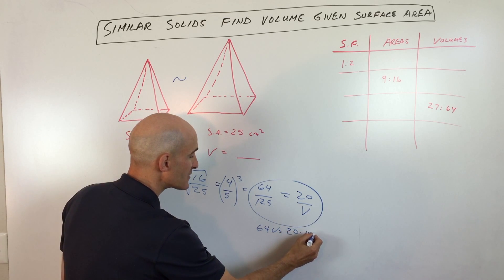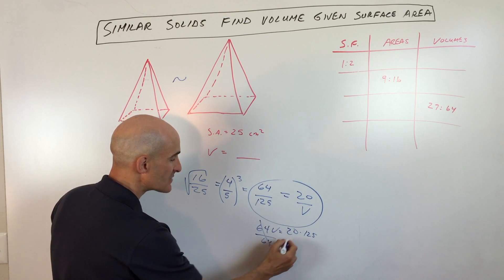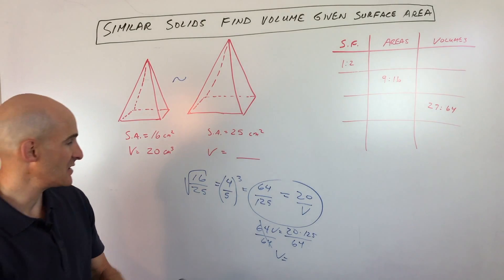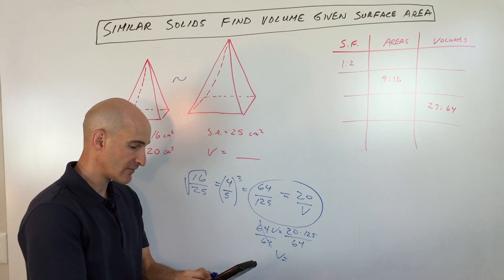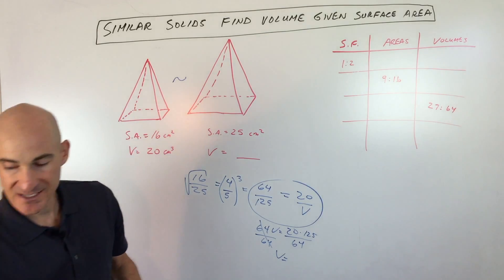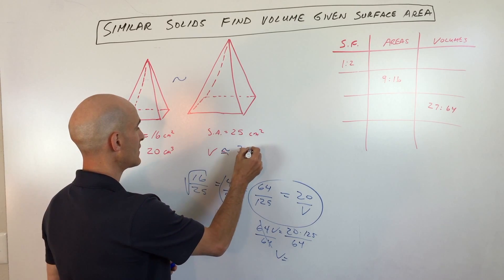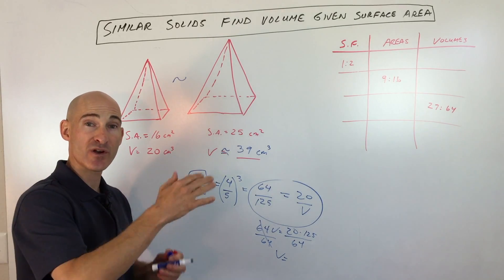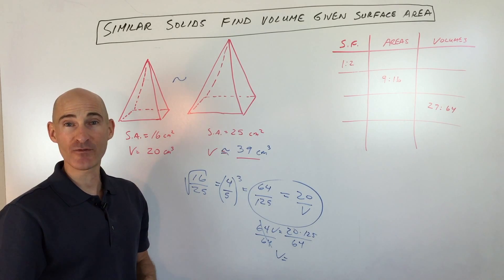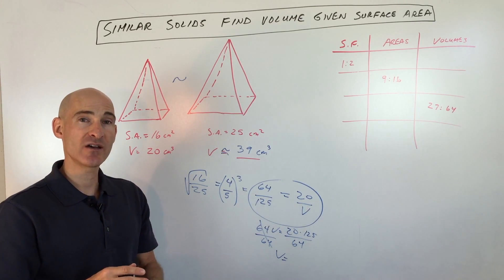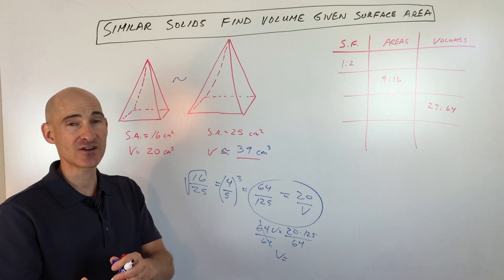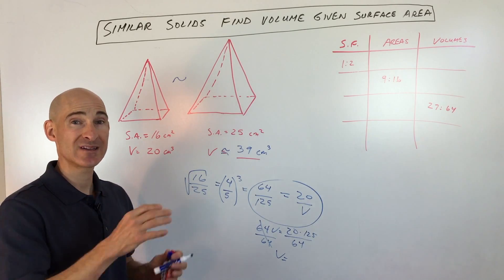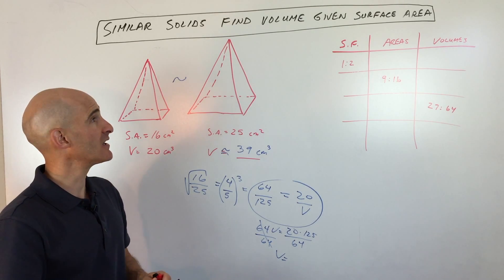Now we know the ratio of the volumes. They give us the volume of the smaller pyramid, which is 20, so I'm going to make a proportion: 20 is to V, the volume of the larger pyramid. Since 64 is smaller than 125, I'm comparing small to large, small to large. To solve, cross multiply: 64V equals 20 times 125, then divide both sides by 64. Using a calculator: 20 times 125 divided by 64 gives approximately 39 centimeters cubed.